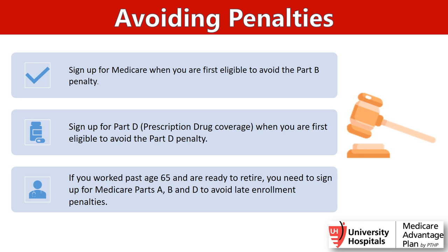What are some of these penalties and how do you avoid them? You want to make sure that you sign up for Medicare when you're first eligible to avoid a Part B penalty, and sign up for prescription drug coverage when you first become eligible to avoid a Part D penalty. If you worked past the age of 65 and are ready to retire, you'd want to sign up for Medicare Parts A, B, and D to avoid all late enrollment penalties.